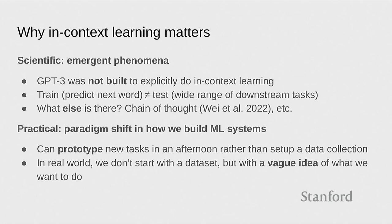There are two reasons — scientific and practical. On the scientific front, this is an example of an emergent phenomenon. GPT-3 was not built to do in-context learning. The developers did not say 'we want in-context learning, so we'll train it this way.' It just sort of emerged from the data somehow. There's also conventional wisdom in machine learning that if your training distribution matches your test distribution, you win; otherwise, all bets are off. And this is far from that setting — training is predicting the next word, and the test is a wide range of downstream tasks, some of which have never been seen at training time. And yet, something is still working.